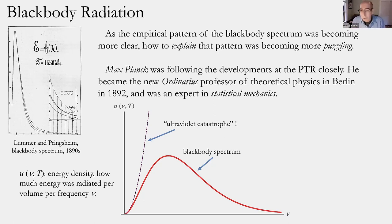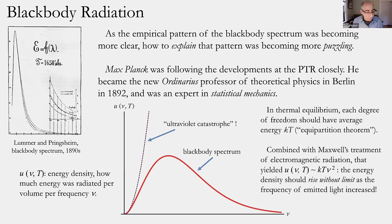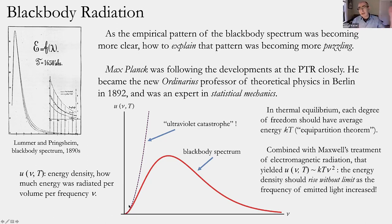Planck was an expert on the new work in statistical mechanics by people like James Clerk Maxwell and Ludwig Boltzmann — how do you make sense of large collections of objects like molecules in a gas and assess their collective properties? Because he was close to the PTR, he began paying more attention to the black body research and realized how hard it was to make sense of this characteristic seemingly universal shape of the black body spectrum.